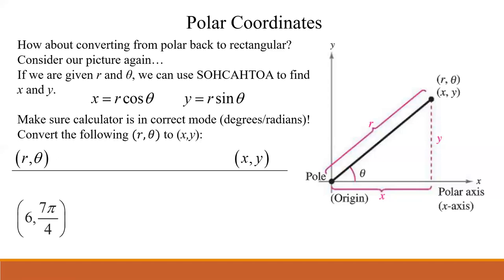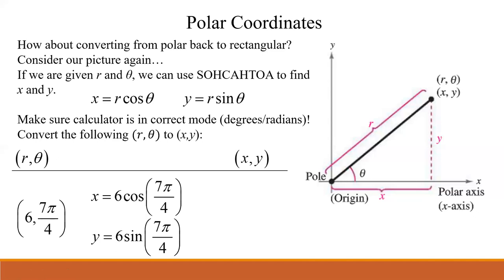Let's see one more example. In this case, notice my theta has a pi — anytime you see pi, or if you do not see a degree symbol, that's in radians. So if you're using a calculator, make sure you switch it back to radians. But it's the same formula, and in this case the values come out to the same numbers just with different signs, because they're in quadrant four.